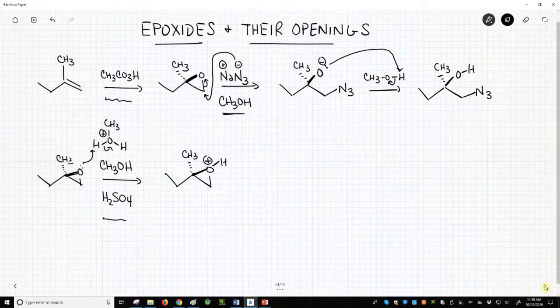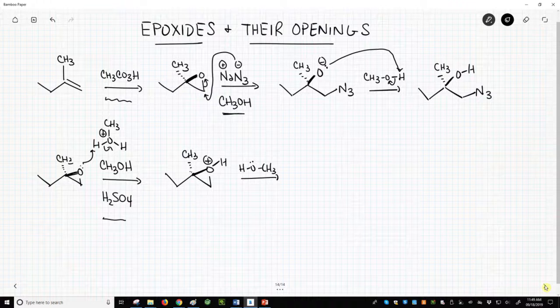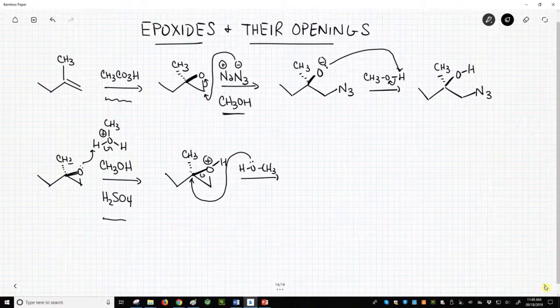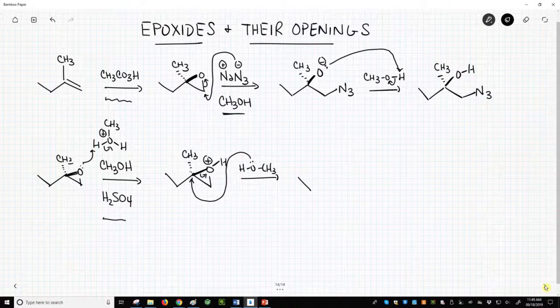Methanol will eventually attack and open the ring. Methanol specifically attacks at the more highly substituted carbon, the opposite of what we saw with the strong nucleophile.